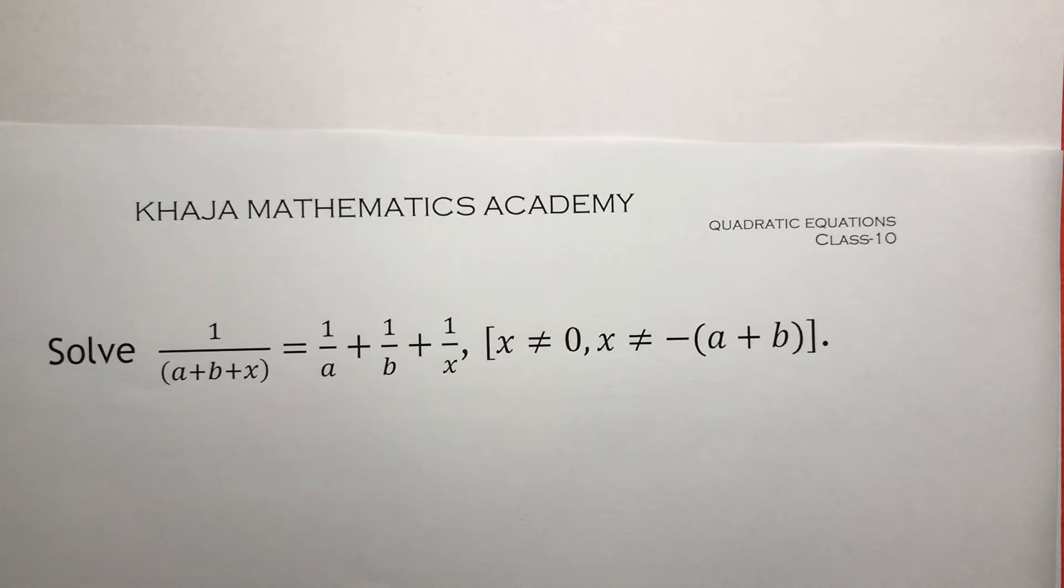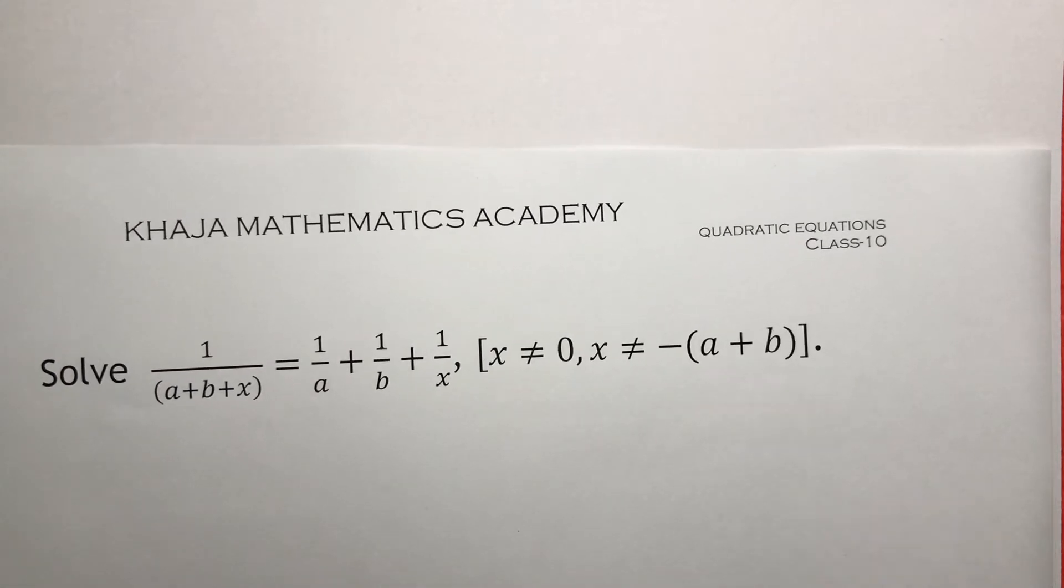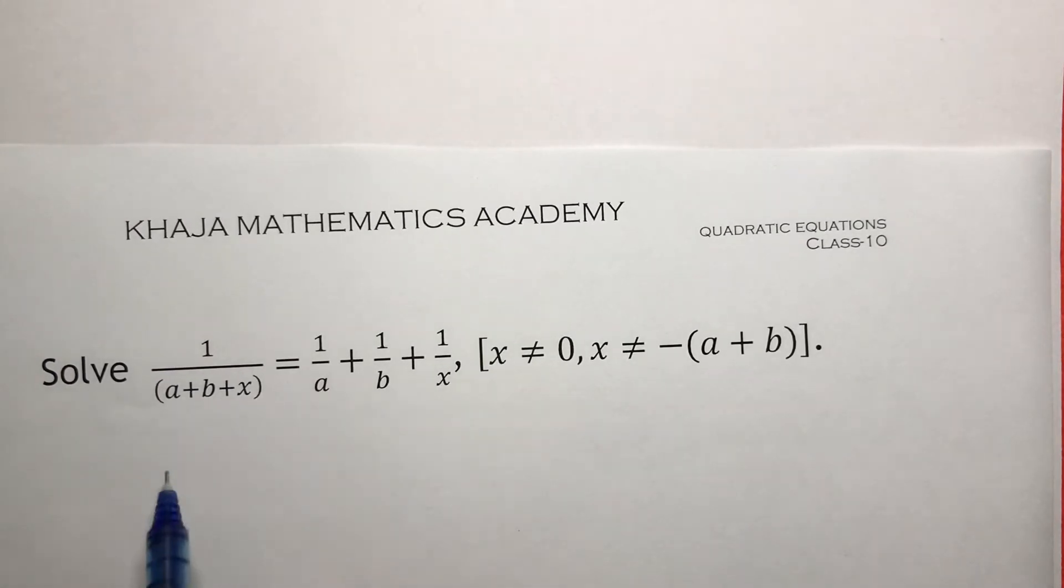Solve 1 by a plus b plus x equals 1 by a plus 1 by b plus 1 by x, where x is not equal to 0 and x is not equal to minus of a plus b. First step, we need to solve.